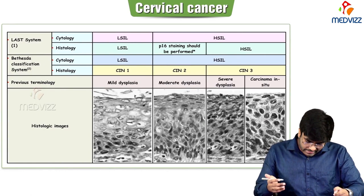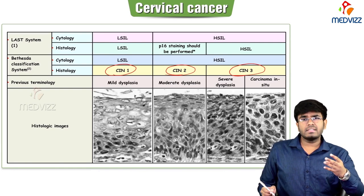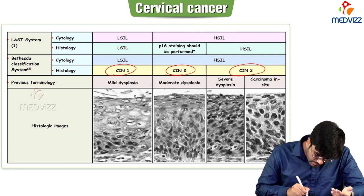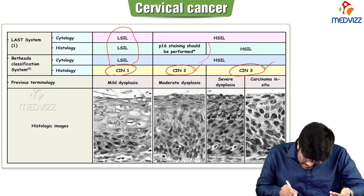CIN1, CIN2, and CIN3 are according to the CIN classification. According to Bethesda classification, the same CIN1 should be considered as L-SIL, but CIN2 and CIN3 should be considered as H-SIL according to Bethesda classification.